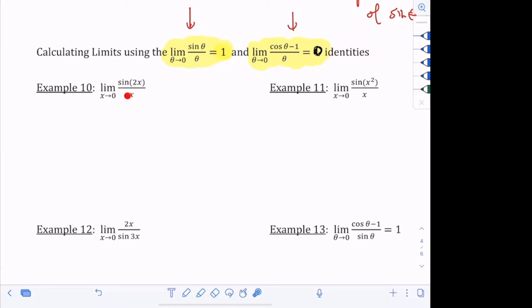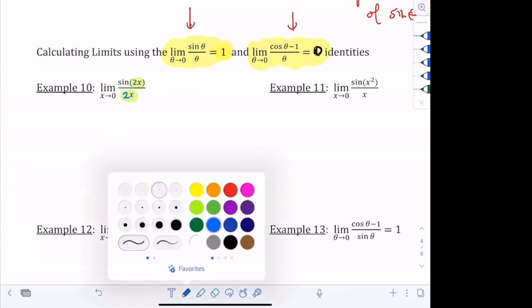That's right, Audrey. I want the bottom to be 2x. So I would love to be able to just put a 2 here. That way the 2x and the 2x are both theta. But am I allowed to just put a 2 wherever I want to? I can't do that. That's illegal. Whenever I do the bottom, I have to do the top. So if I'm going to multiply the bottom by 2, I also have to multiply the top by 2. Then I'm just multiplying by 1. Can everybody see that?